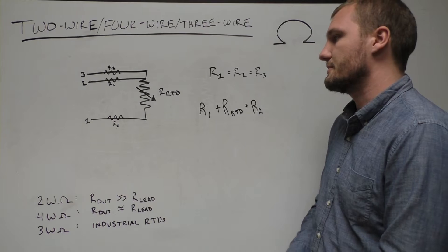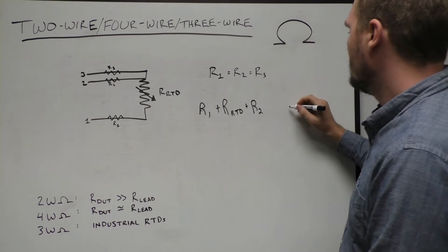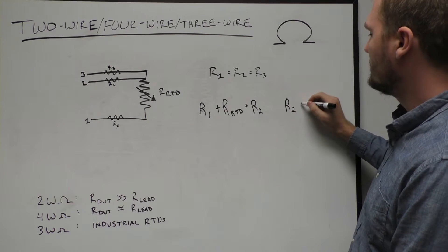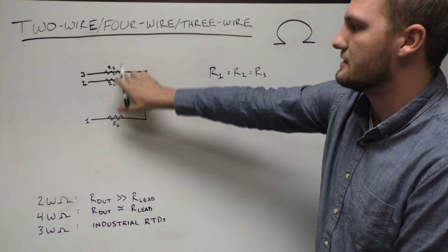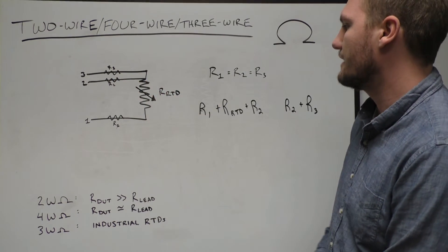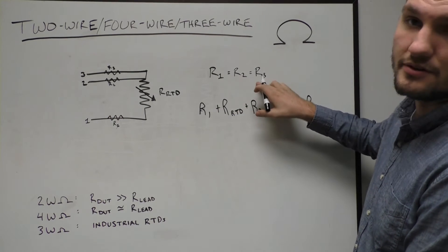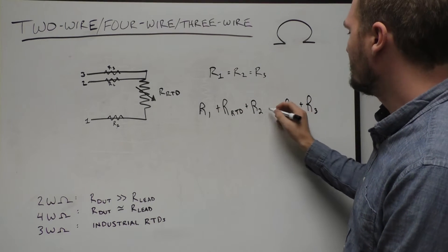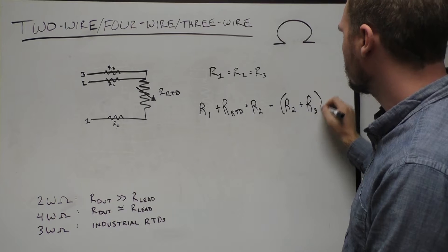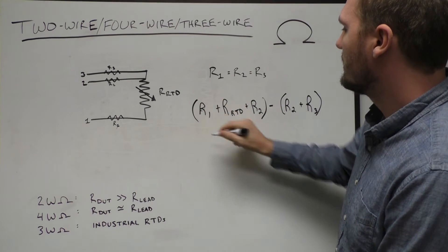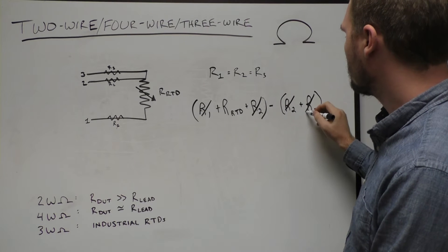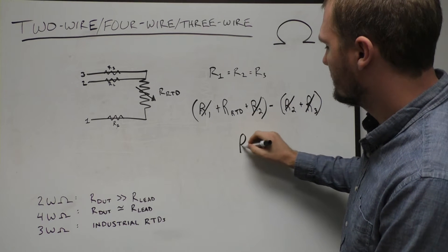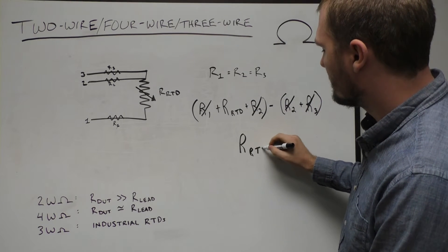So you have the lead resistance of this wire and this wire and the RTD. Then you make a second two-wire measurement between points 2 and 3, which gives you R2 plus R3, so the lead resistance of both of these wires. And now, because R1, R2, and R3 are all equivalent, you can subtract these two measurements and cancel out R1 and R2 and R2 and R3, leaving you with just the resistance of the RTD.